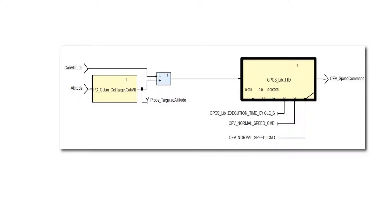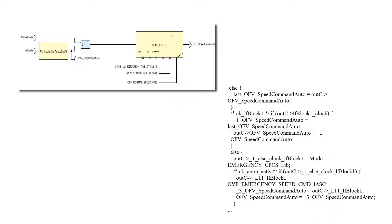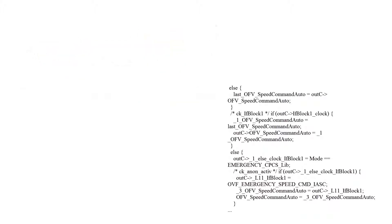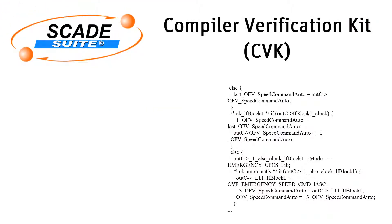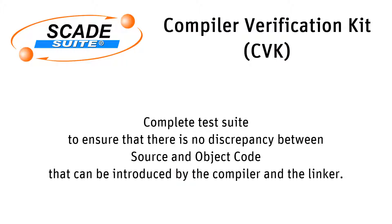During these phases, it is also extremely important to know whether the architecture and code are compatible with the hardware target. SCADE Suite Compiler Verification Kit, or CVK, contributes to this verification. CVK is a complete test suite providing a sound combination of C constructs generated from the SCADE model. This test suite comes with input and output vectors, which allows you to validate that any code generated from SCADE can run on the final target.